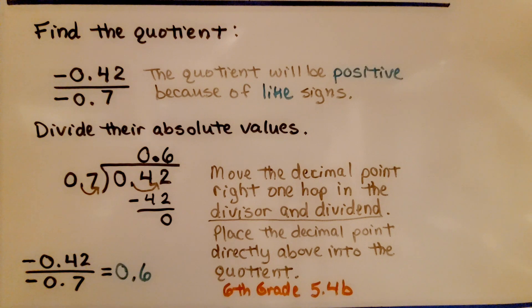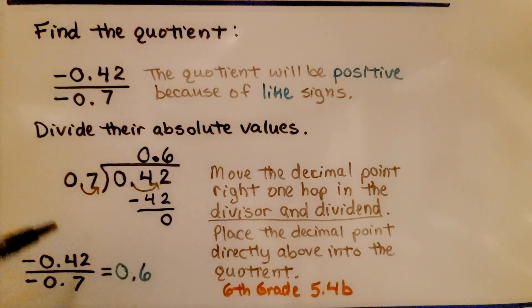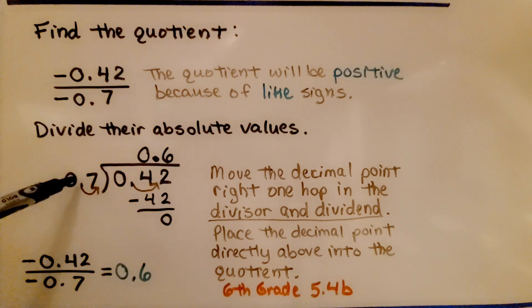Find the quotient. We have negative 0.42 divided by negative 0.7. The quotient will be positive because of like signs. We're going to divide their absolute values. When you've got a decimal number on the outside here as the divisor, if we move it over to the right one hop, we'll be dealing with a whole number.